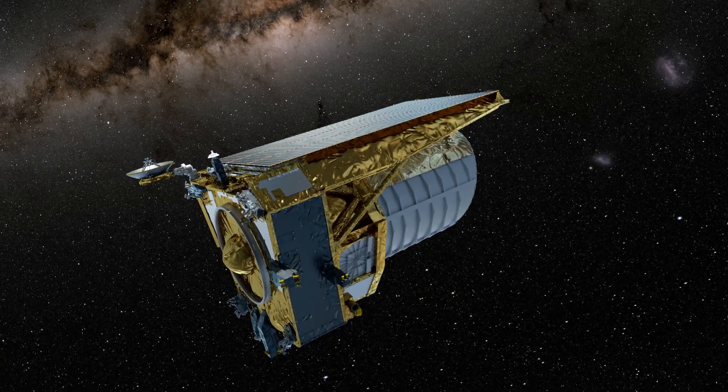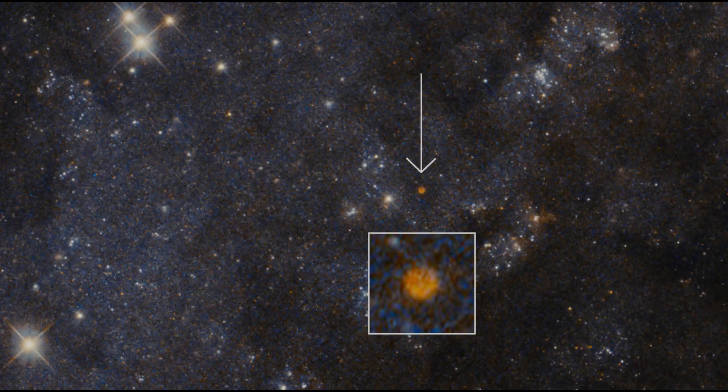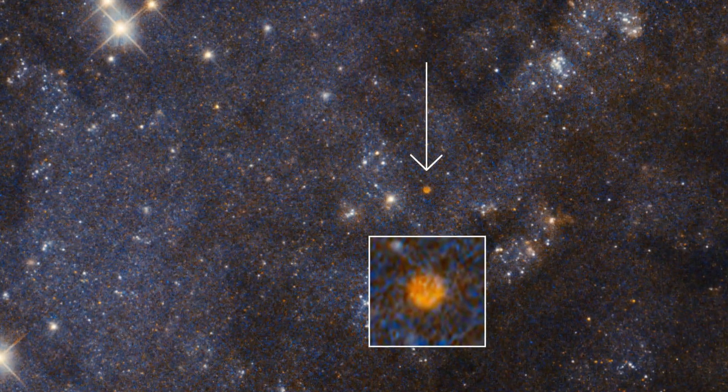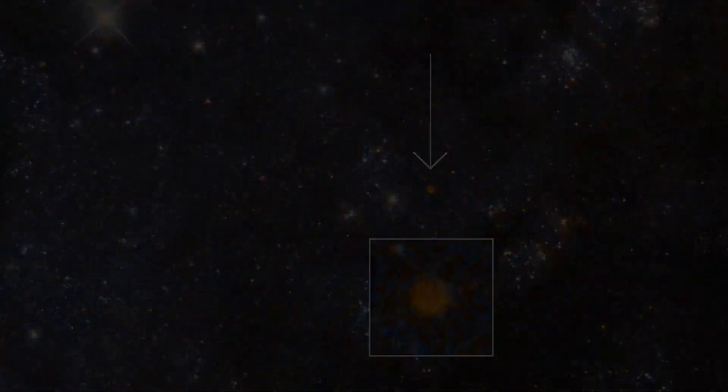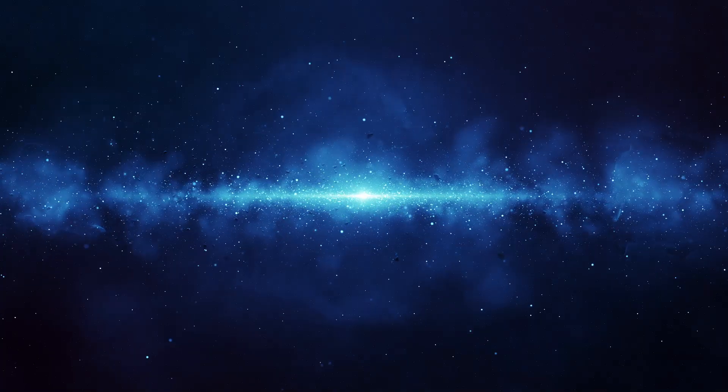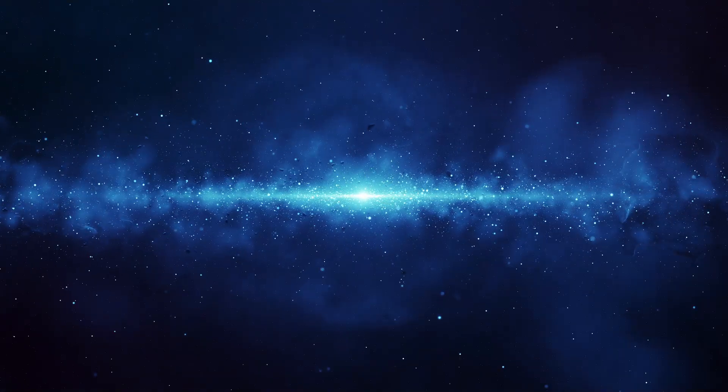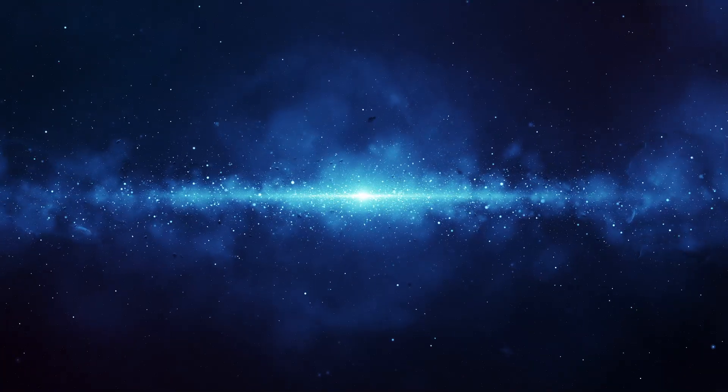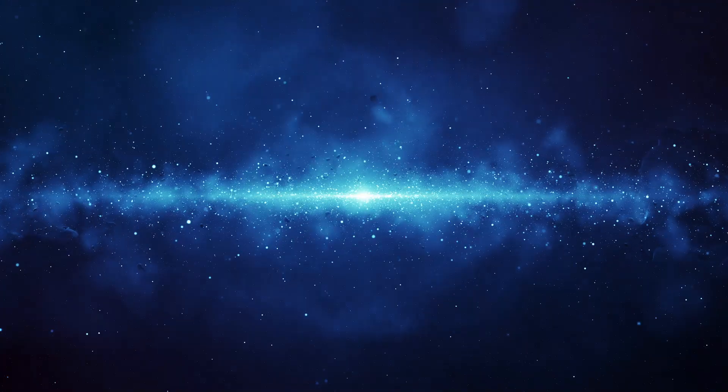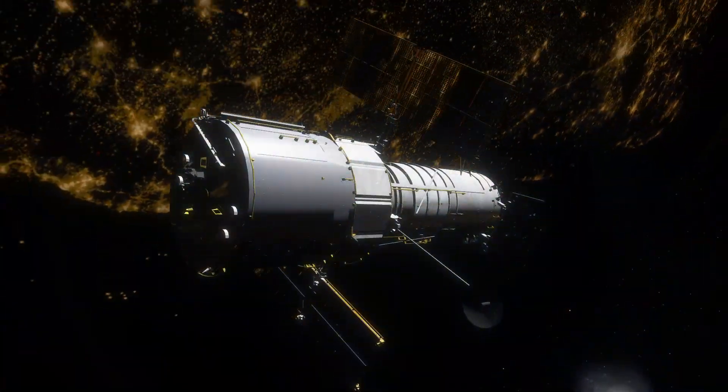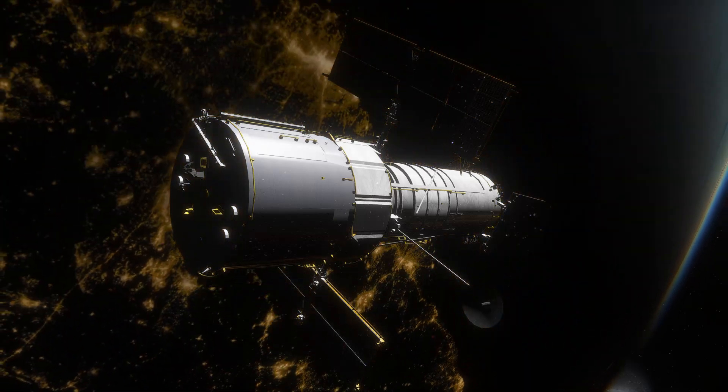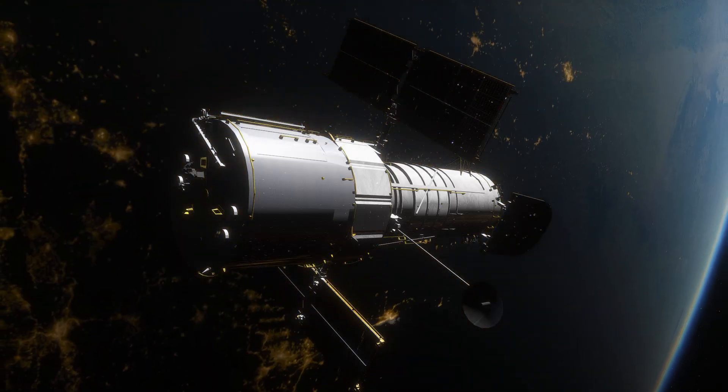Euclid Space Telescope brings into focus the spiral galaxy IC 342, hidden behind our Milky Way and located 11 million light-years from Earth. Utilizing its near-infrared capabilities, Euclid transcends the Milky Way's obscuring dust, allowing unprecedented insights into the formation and evolution of IC 342 stars and star clusters. This detail surpasses previous observations by the Hubble Space Telescope, offering a deeper understanding of spiral galaxies like our own.